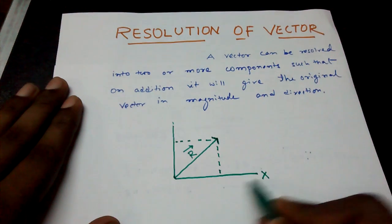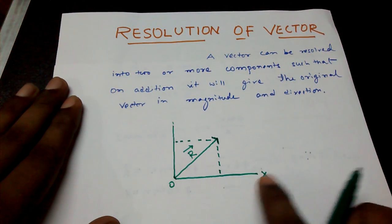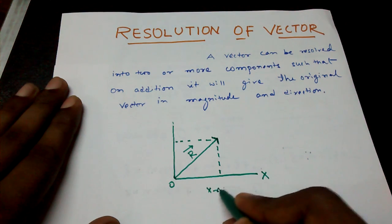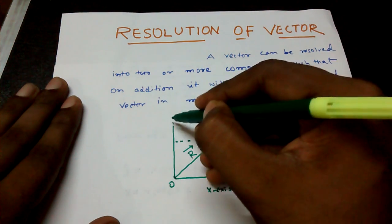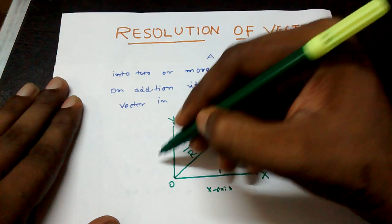This is origin, this is OX, the X axis, and this is OY, that is the Y axis.